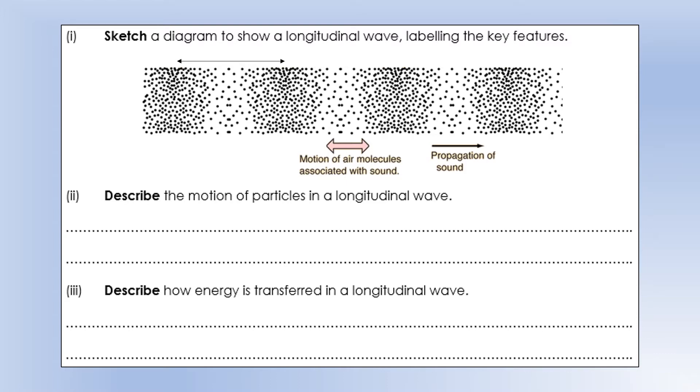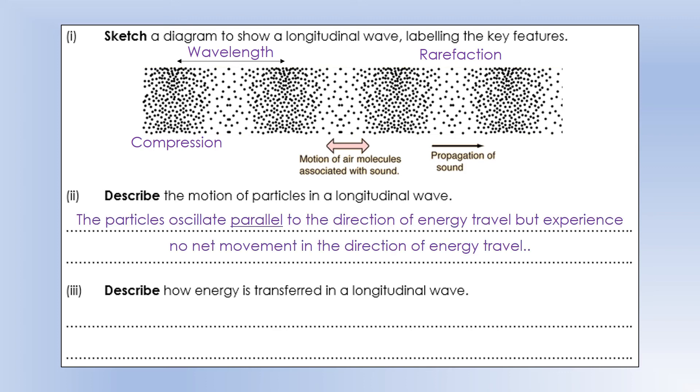So first of all, if we look at what a longitudinal wave looks like, we get these regions of compressions and regions of rarefaction as we oscillate the particles backwards and forwards by providing some sort of external force. In this diagram, the sound wave is progressing from left to right, but the particles are just oscillating backwards and forwards. Because the particles aren't actually going anywhere. The particles oscillate parallel, but not actually going anywhere.